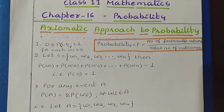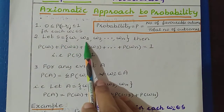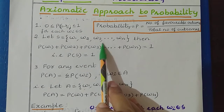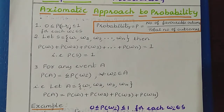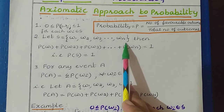Now let us consider the second rule, where the sample space S equals {ω1, ω2, ω3, ..., ωn}. These are the outcomes of the experiment. The probability value of the sample space is always equal to 1. If you consider any experiment such as rolling a die or tossing a coin twice, in any random experiment the probability of the sample space is always equal to 1. And that we can get by adding the probability of the outcomes.